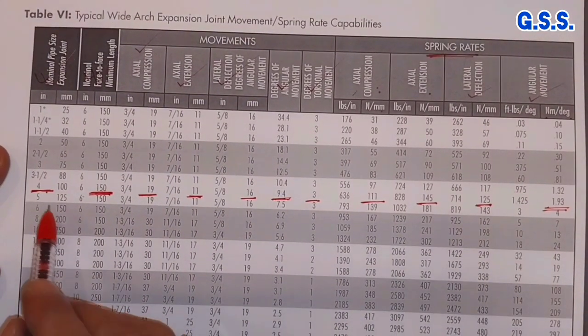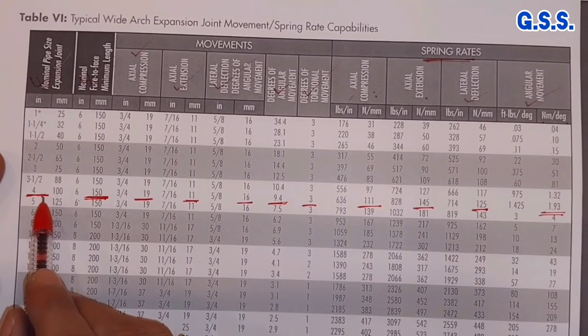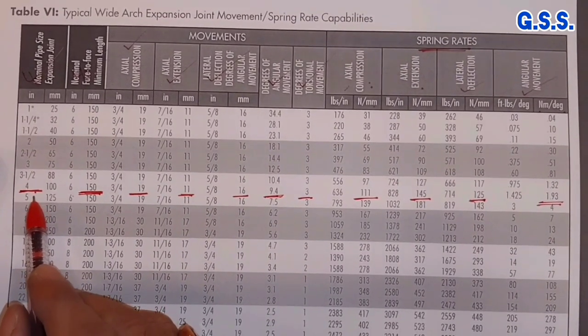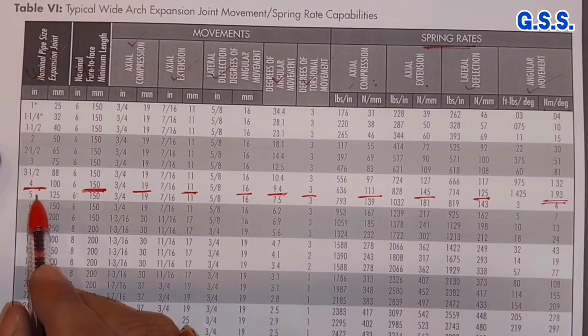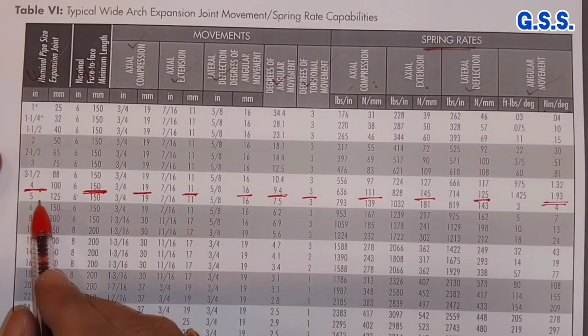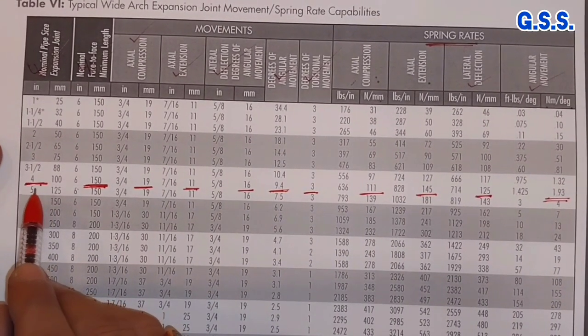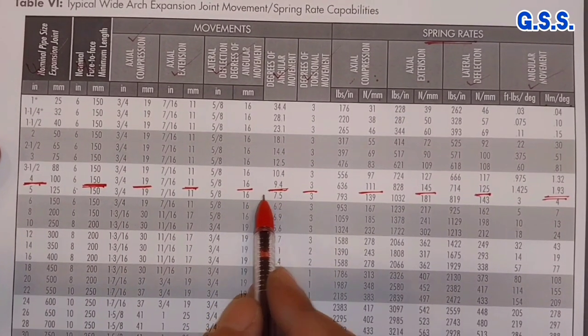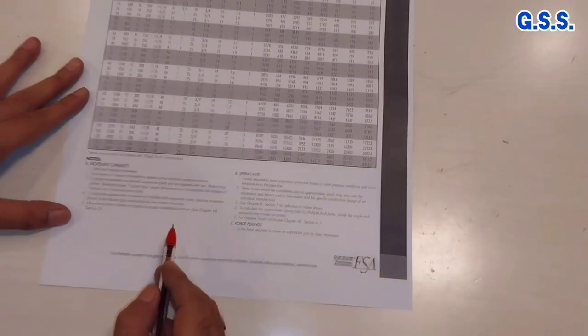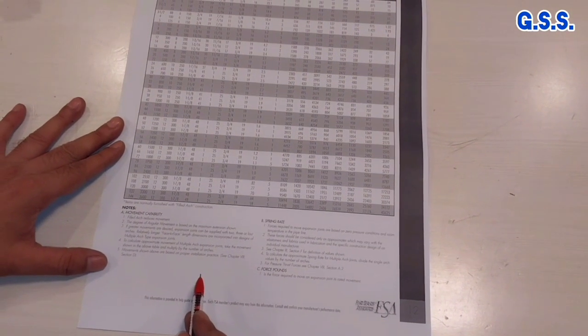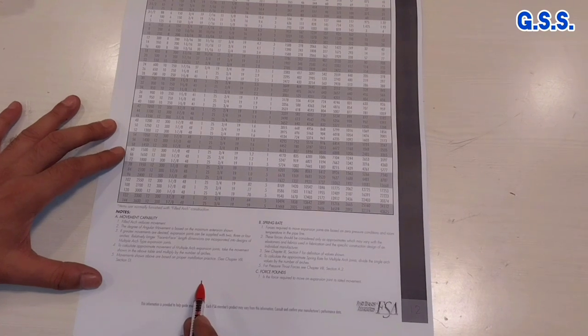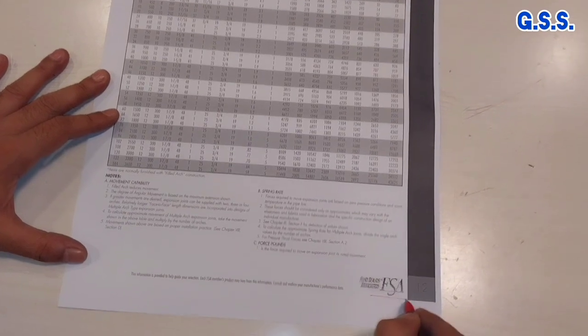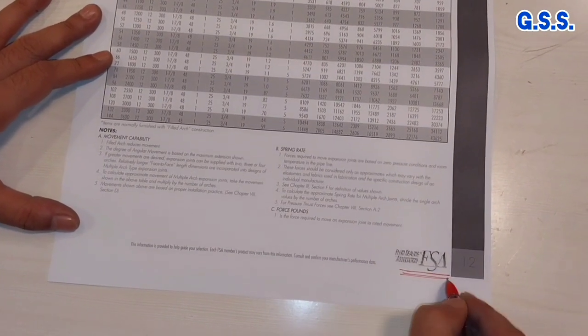So, if we just specify the bellow size, design pressure, and design temperature, and other parameters, if we specify as per FSA standard, then manufacturers will be able to design the bellow as per this standard. This Fluid Sealing Association standard means FSA standard covers design details of all kinds of non-metallic bellows, including all kinds of rubber bellows.